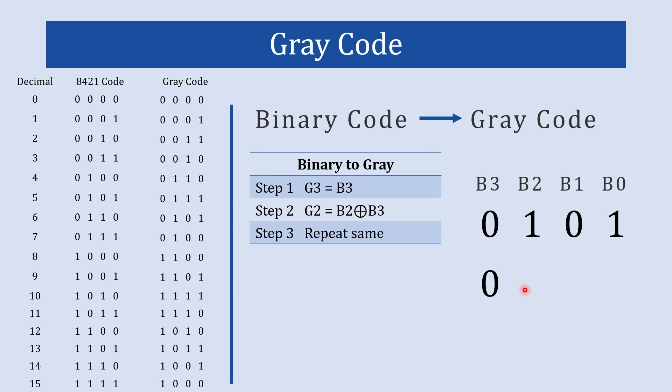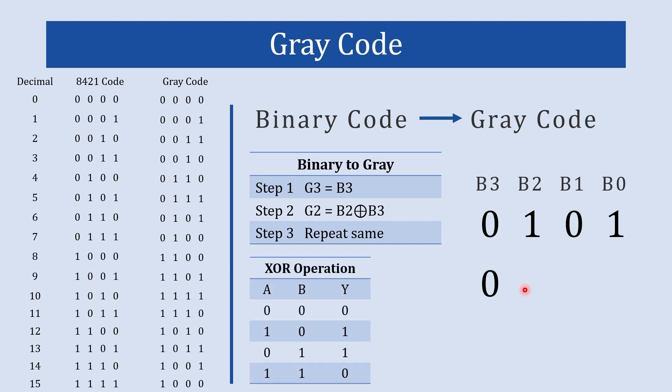Now the question is how to do the XOR operation. In this video I will give you a table of XOR operation and a trick for it. Here is the table: when both inputs of the XOR gate are the same, the output is 0, and when both inputs are different, the output is 1.